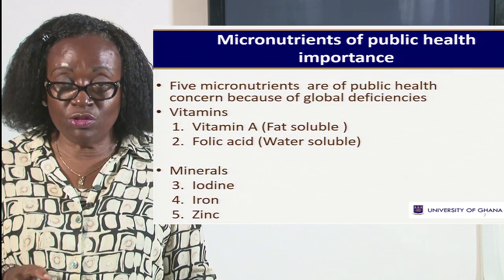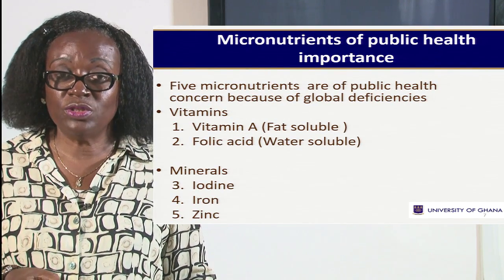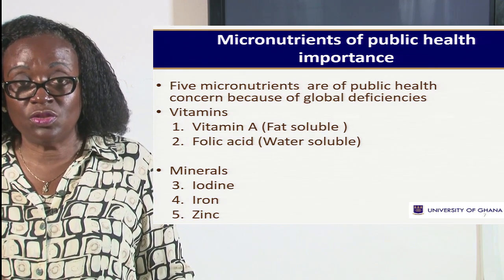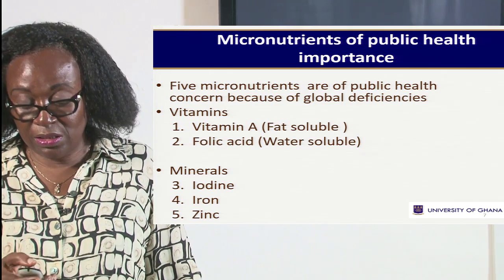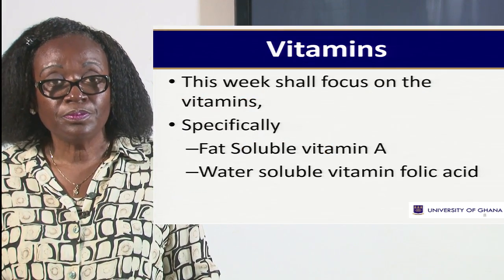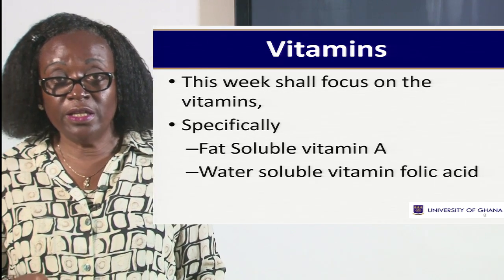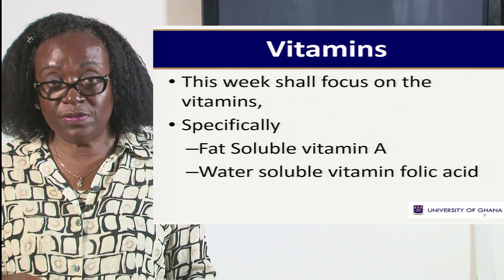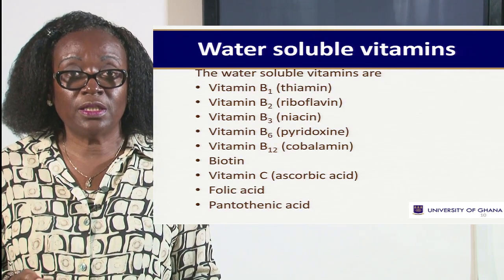In these three minerals, we are finding a lot of deficiency in Ghana. Iron, for example, is one major problem associated with maternal mortality in Ghana and West Africa in general. This week we shall focus on the vitamins — specifically fat soluble vitamin A and water soluble folic acid — and then next week we move on to the minerals.